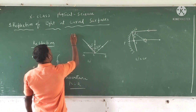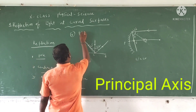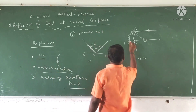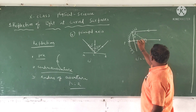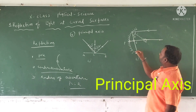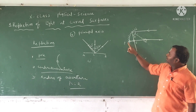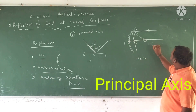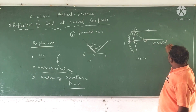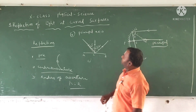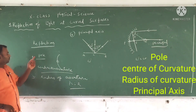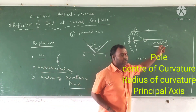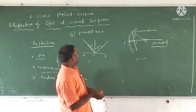What is meant by principal axis? Principal axis is any horizontal imaginary line passing through the pole and center of curvature. So we have discussed the reflection at curved surface and covered the following terminology: pole, center of curvature, radius of curvature, and principal axis.